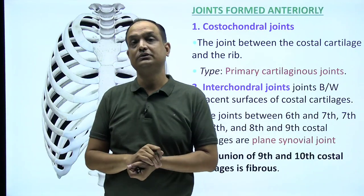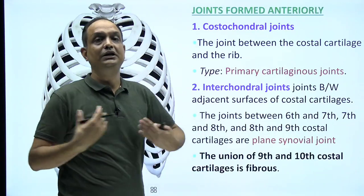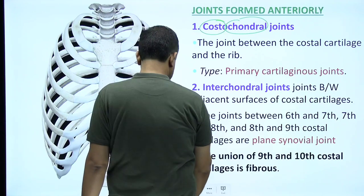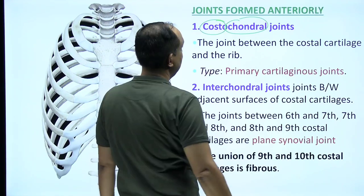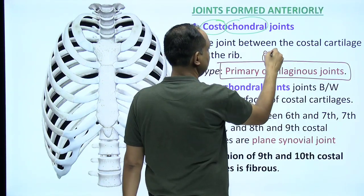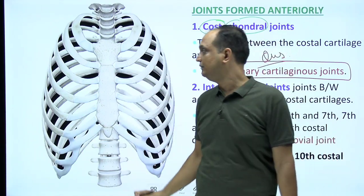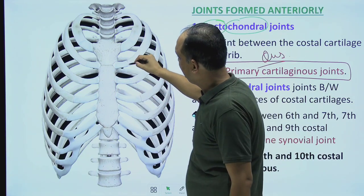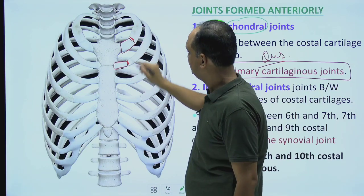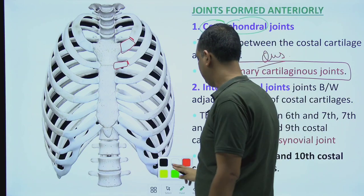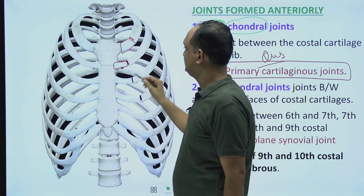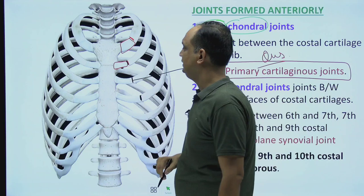Moving to the anterior joints, first is the costochondral joint — 'costo' means rib, 'chondral' means cartilage. This joint is between the costal cartilage and the rib and is a primary cartilaginous joint. The junction is visible as a line between the anterior end of the rib and the costal cartilage.